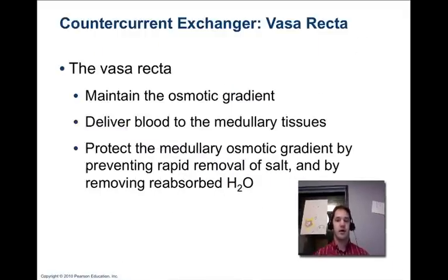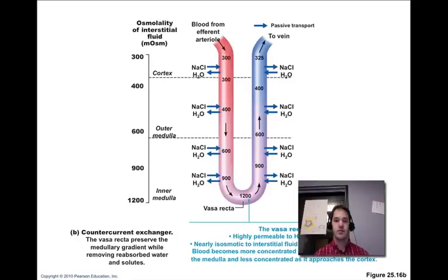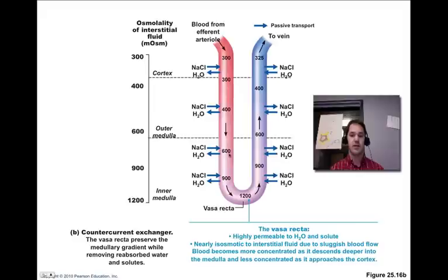Those tissues still need blood flow, and the vasa recta delivers blood to the medullary tissues. Normal blood flow would just wash away that osmotic gradient and equalize it with that of normal blood. The vasa recta flows very slowly and protects the medullary osmotic gradient by preventing rapid removal of salt and by removing reabsorbed water. Essentially, the vasa recta ends up having pretty much the same osmotic gradient as the interstitial fluid in the medulla, helping to maintain this osmotic gradient.